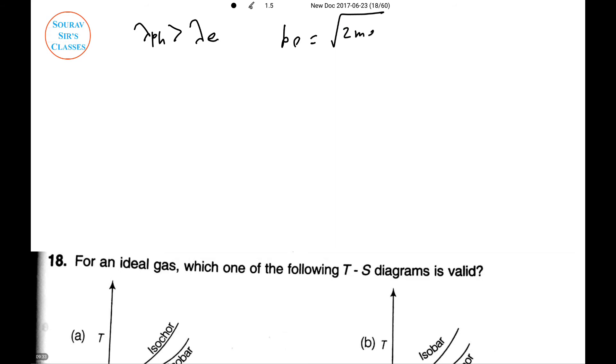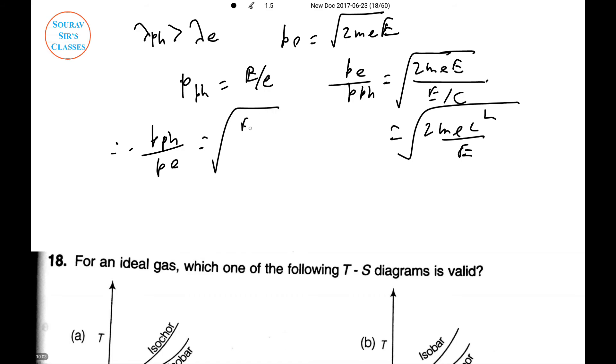The momentum of an electron is pe = √(2meE), and momentum of photon is pph = E/c. So pe/pph = √(2mec²/E). From the previous calculation, this is also greater than 1, so pph < pe. Ultimately, option (b) is the only correct answer.